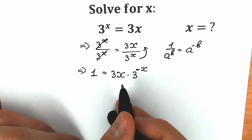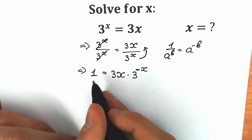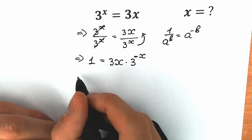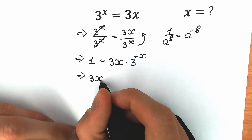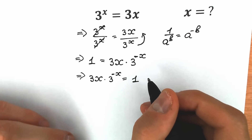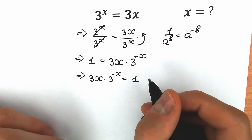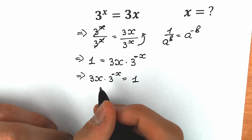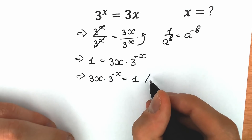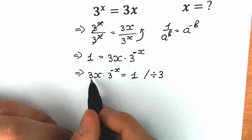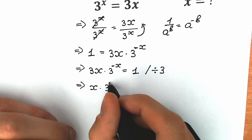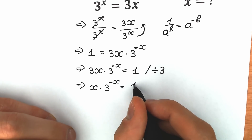For better understanding, let's change positions — variables on the left side, constants on the right side. So we have 3x times 3 to the power minus x equal to 1. Now the second tricky move: let's divide both sides by 3 to leave the variables on the left side. As a result, we have x times 3 to the power minus x equal to 1 over 3.